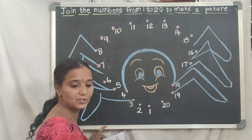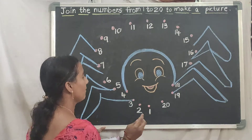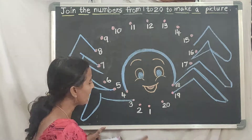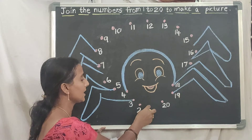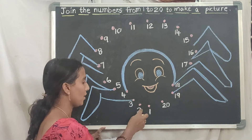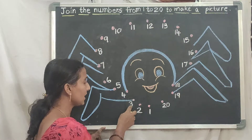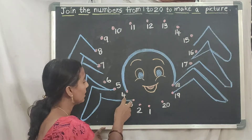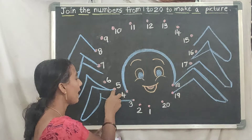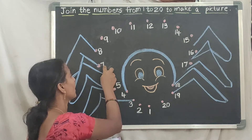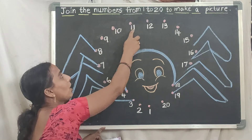Start from 1 children. Look here — where is number 1? Find out. Here, beside 1 you can see the dot. This is dot 1. Then 2 dot, 3 dot, 4 dot, 5 dot, 6 dot, 7 dot, 8 dot, 9 dot, 10 dot.